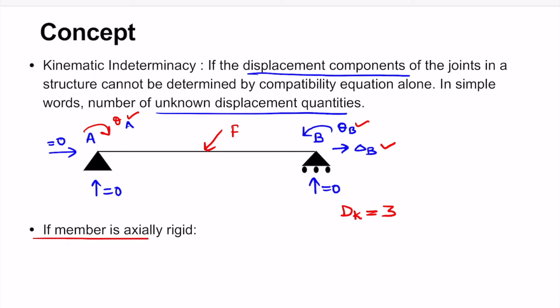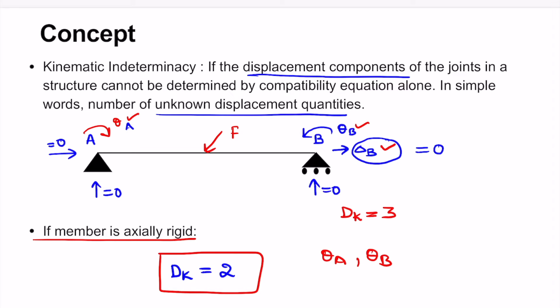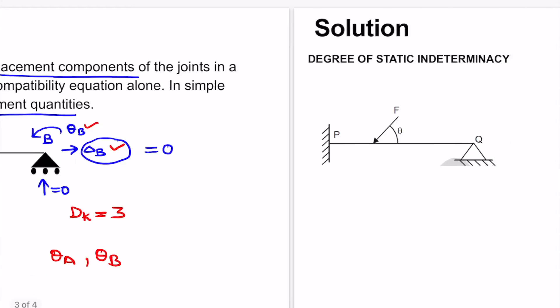If the beam AB is actually rigid, the only difference is that delta B becomes zero, because a rigid beam will not allow the roller support to move horizontally. Therefore, the degree of kinematic indeterminacy reduces to two, with only theta A and theta B as the unknown displacement quantities. Keeping these concepts in mind, let us solve our problem.